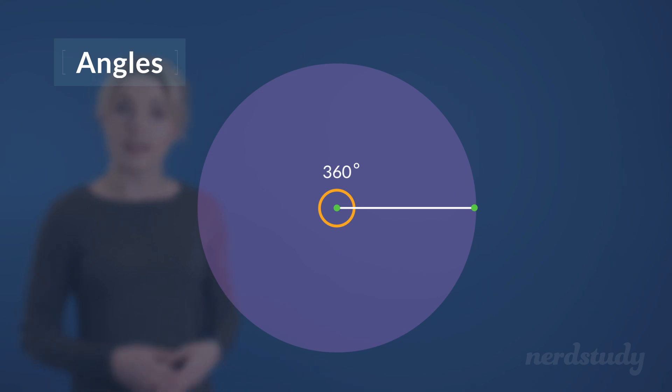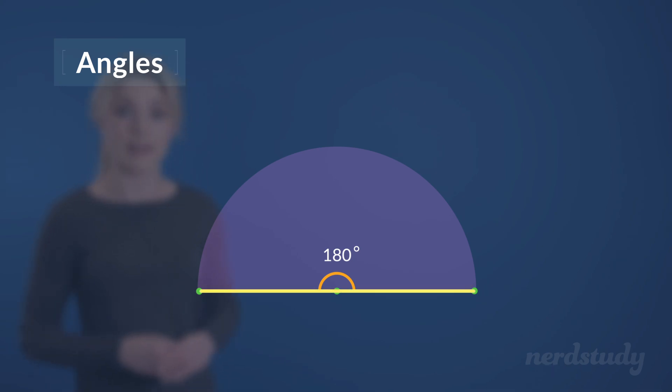And instead, if we were looking at half of 360 degrees, which would be 180 degrees, we would be looking at half of the rotation of a circle. And, of course, what we end up with is the two line segments creating just one flat line segment.